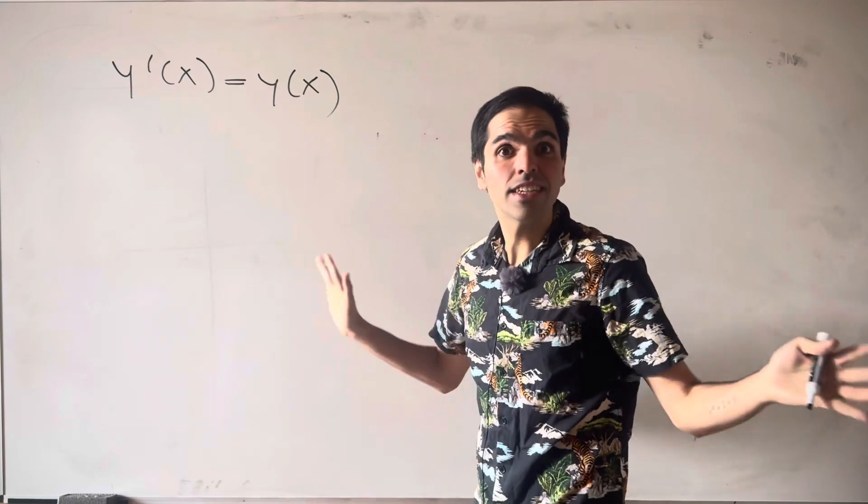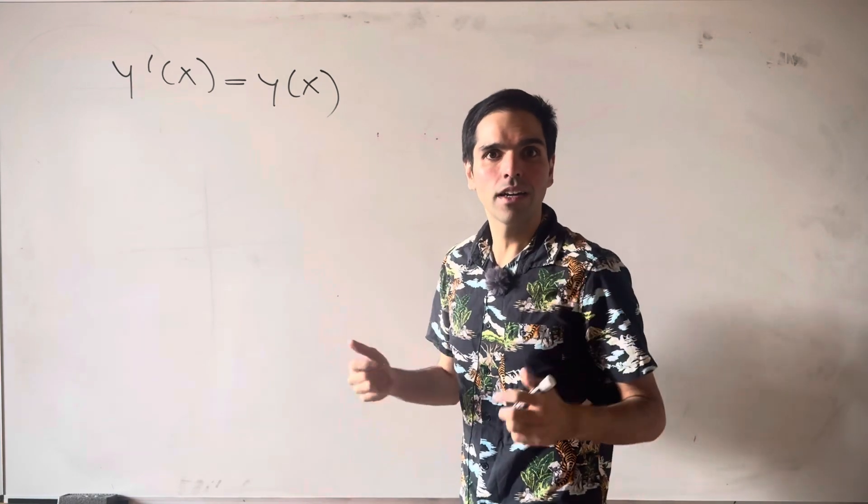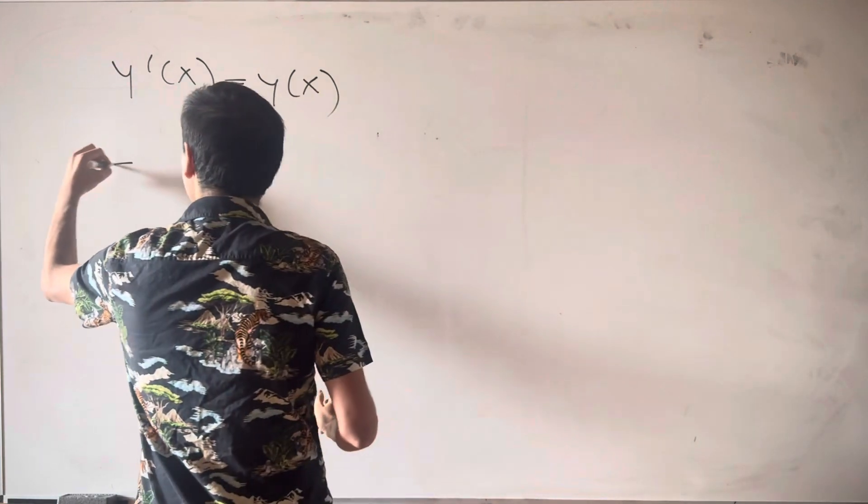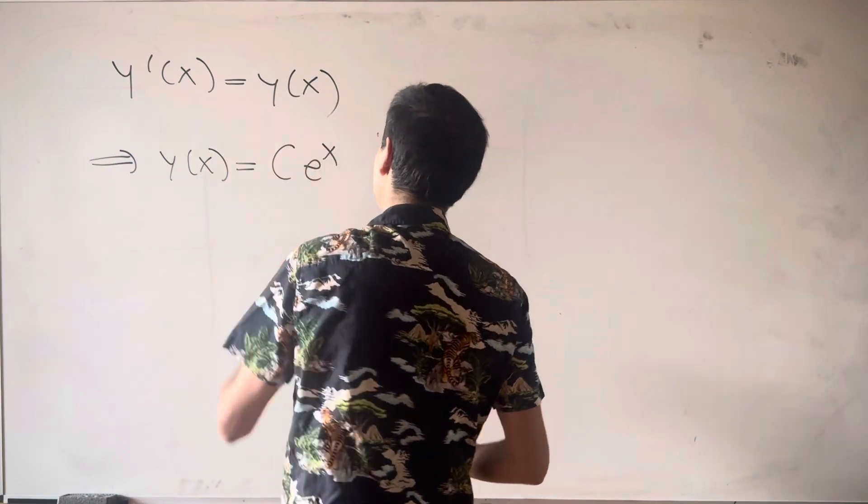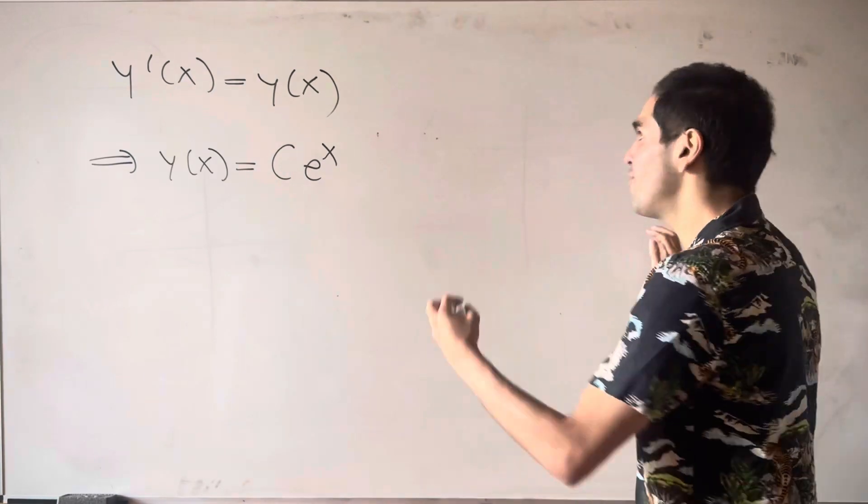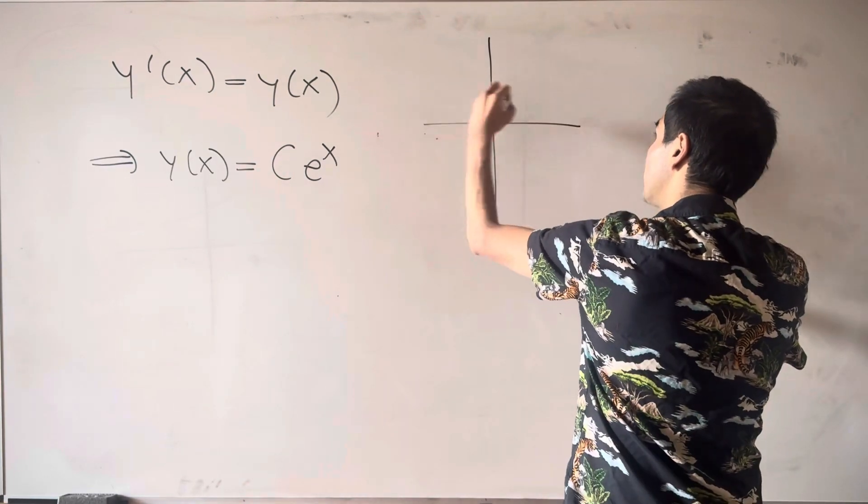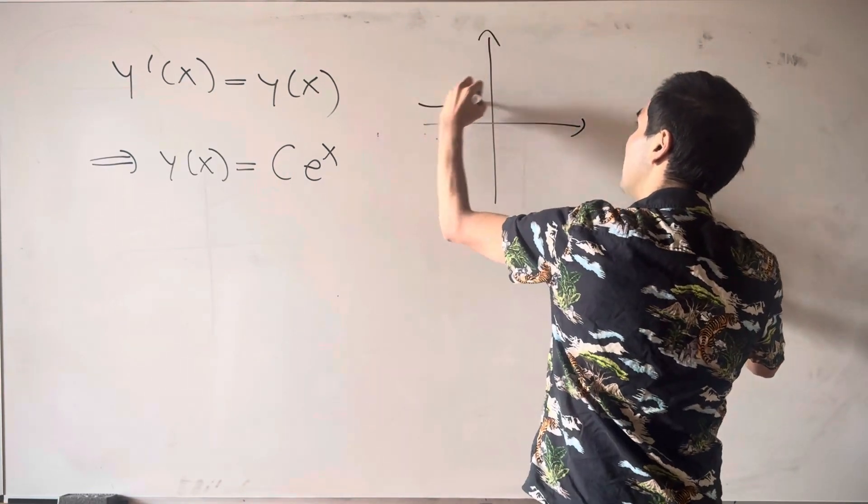Which is the basic ODE from lecture 1 of your ODE class, whose solution is C e to the x. So in fact, we finally found what this curve looks like. It's just exponential curves, as we suspected.